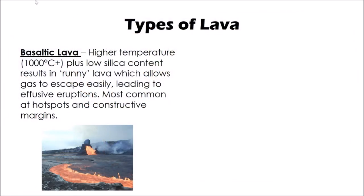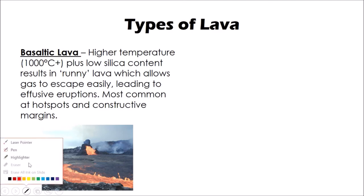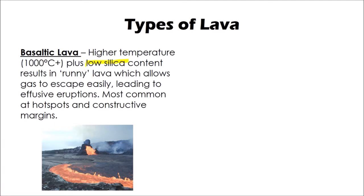An important aspect of understanding volcanic activity is understanding the types of lava, because not all lava is the same. It has different characteristics depending on where and how it has been formed. One type at one end of the scale is what we call basaltic lava - quite high in temperature and low in a mineral called silica. Silica is a mineral which alters the viscosity of the magma. When you have lots of silica, the magma is very thick; where you have very little silica, the magma is very runny. With basaltic lava being very runny, the gases can escape easily, and gas within magma is the thing which powers the eruption.